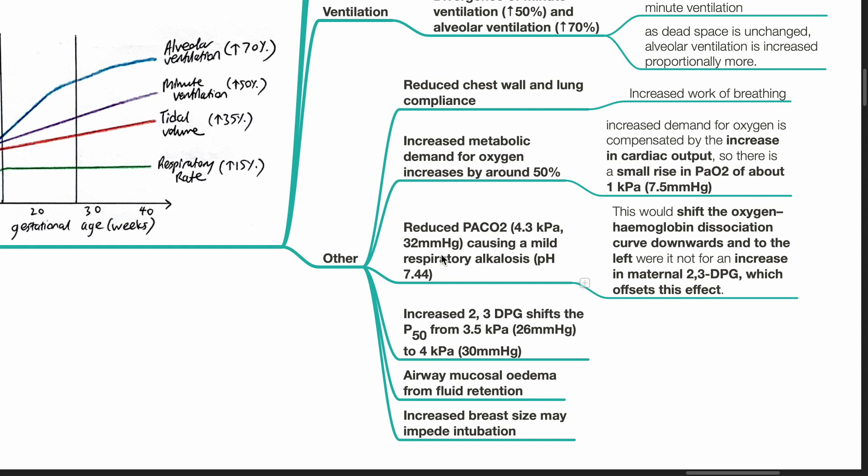PaCO2 is 32 mmHg and pH increases to 7.44. This would shift the oxygen hemoglobin dissociation curve downwards and to the left, were it not for an increase in 2,3-DPG, which offsets this effect.